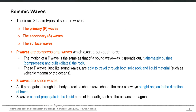These waves are classified into three basic types of seismic waves: P waves (primary waves), secondary waves (S waves), and surface waves. P waves and S waves are also called body waves, because they travel through the body of the earth to reach a certain location on the surface. Surface waves on the other hand travel along the surface to reach any location.